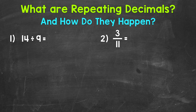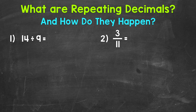We get repeating decimals when we divide and never get a clean cut zero as we go through our division process. The pattern just continues on forever and the division never ends. Repeating decimals can happen when we have a division problem, like number one, or when we are converting a fraction to a decimal like number two. And when we convert a fraction to a decimal, we divide, so in that case repeating decimals come from division as well.